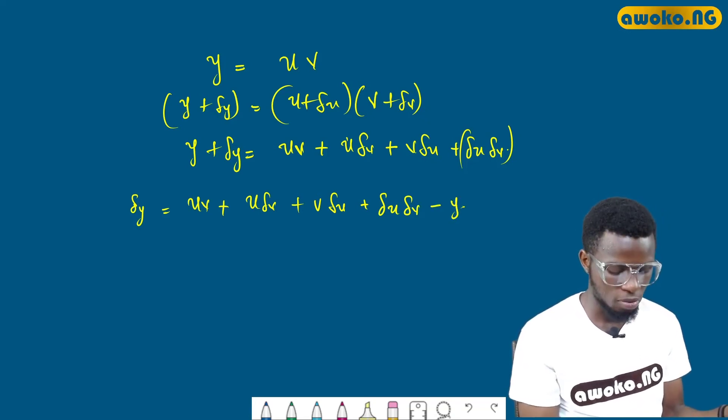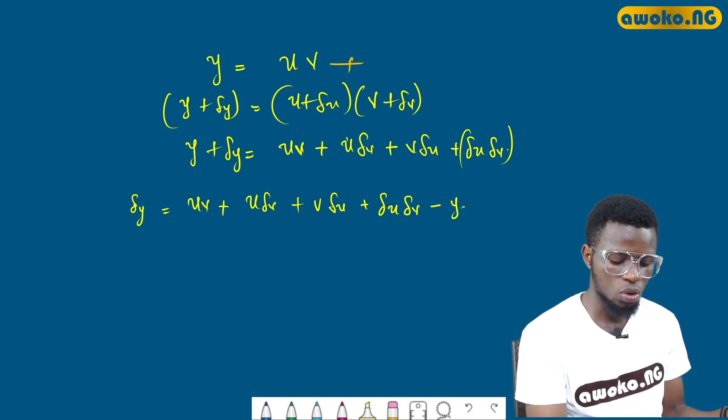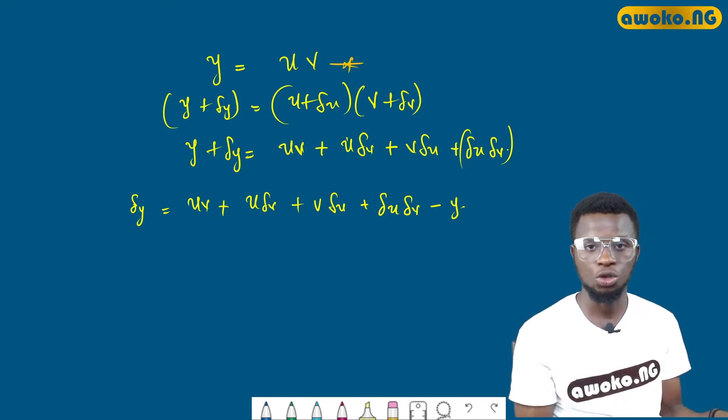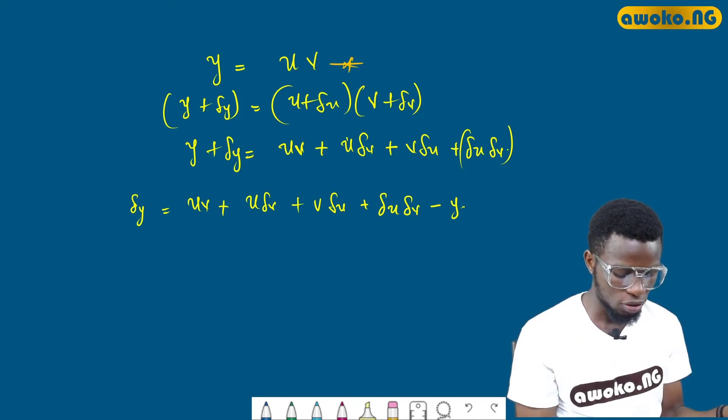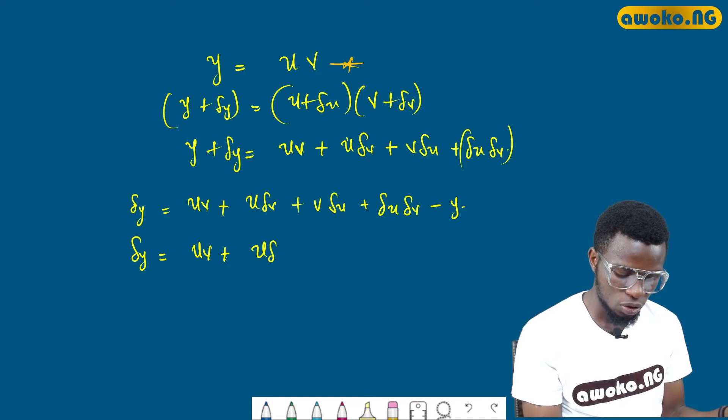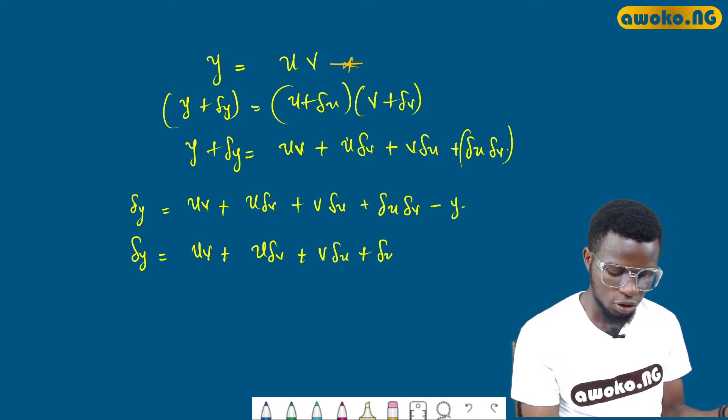What then is y from our initial equation? We have y to be uv. To continue with this, I will have dy equals uv plus u(dv) plus v(du) plus du(dv) minus uv.